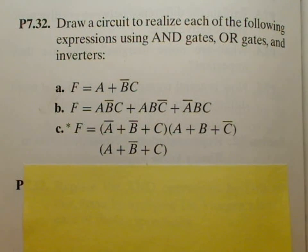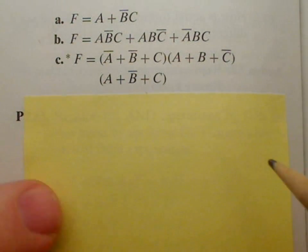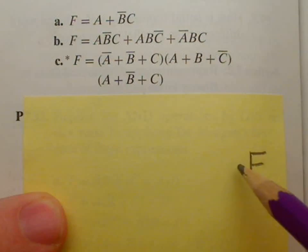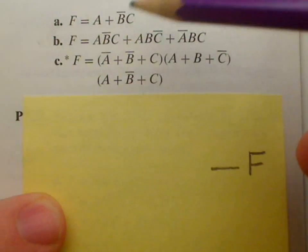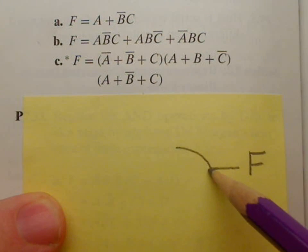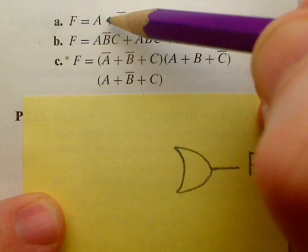What that means is we need to sketch a circuit, and what I recommend doing is starting from right to left, so our output is F, and you see that what's being fed into F is something that comes from an OR gate, and we can see that because of this plus sign, that means OR.